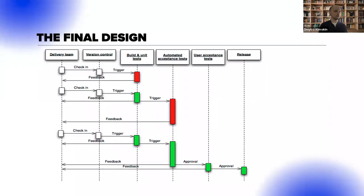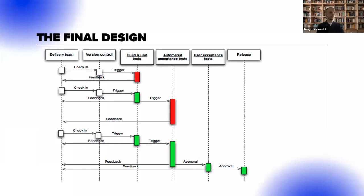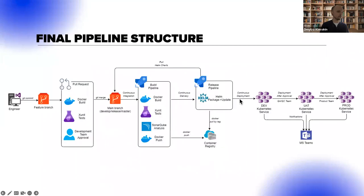When you're going into the final design of the CI/CD pipelines, you can also put that on a diagram — visualize it somehow using a sequence diagram or some simple diagrams.